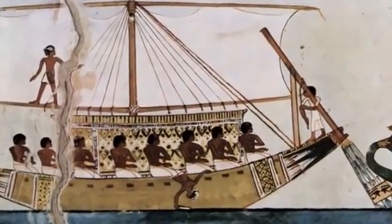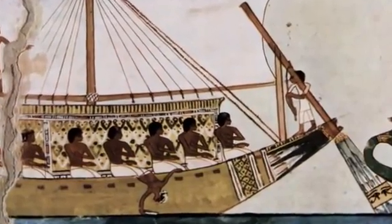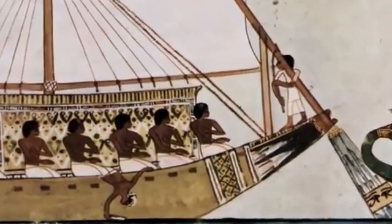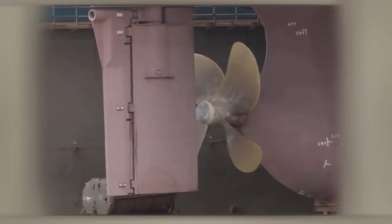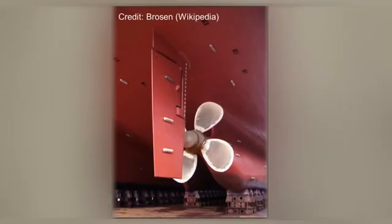The rudder evolved from the steering board that was used in ancient times. The steering board was usually mounted on the right-hand side to suit right-handed sailors. In time, the steering board moved onto the center line through a stock passing through the vessel. A tiller was then attached to the stock, allowing sailors to control the rudder from the main deck.